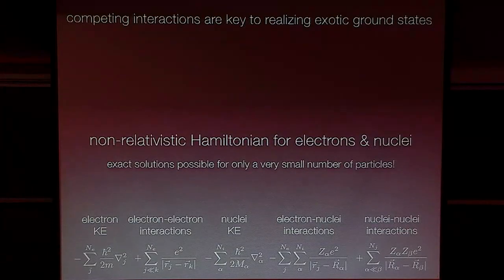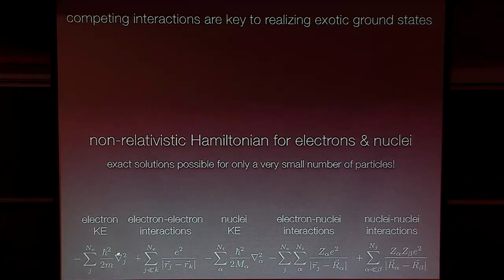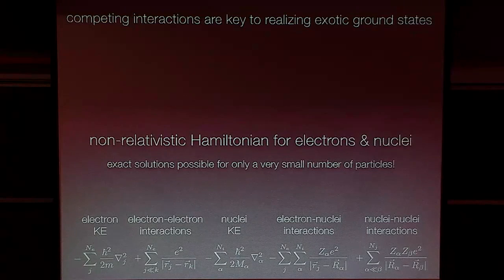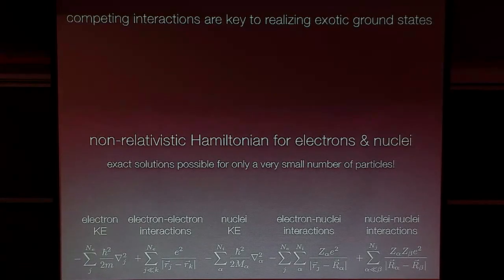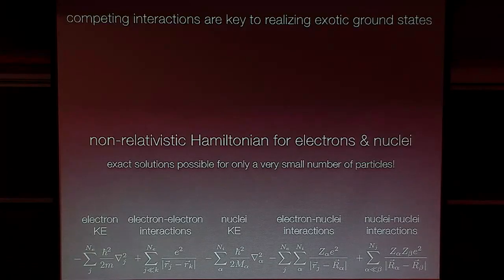I'll start with the many-body Hamiltonian that you probably learned about in your second or third semester quantum mechanics class — the non-relativistic Hamiltonian for interacting electrons and nuclei. The first thing you learn is that it's basically impossible to solve for anything more than a handful of particles. Trying to directly attack this problem is more or less intractable, so we come up with different kinds of approximations. This is why the many-body problem is still a very challenging, unsolved problem.